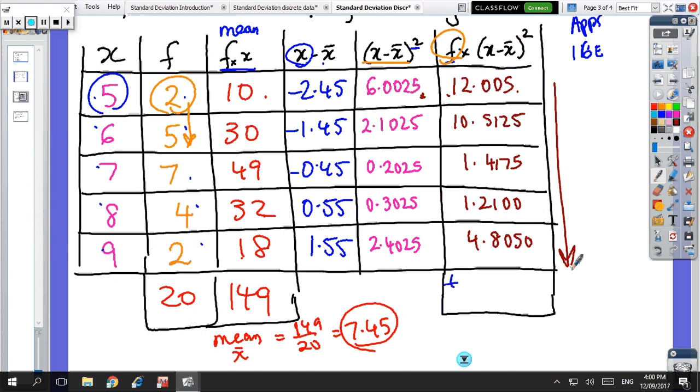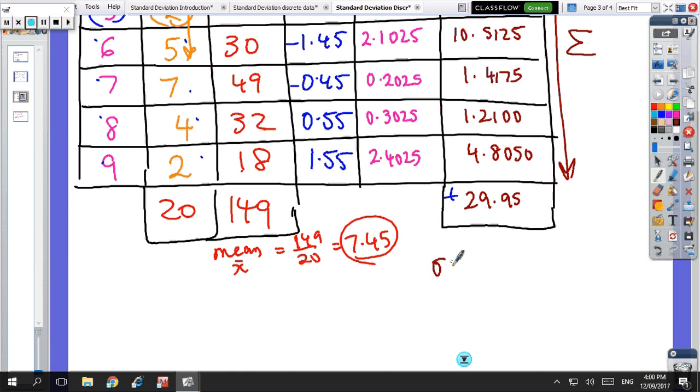Now we have to add up all these numbers because we have to get the sum. So 4.805 plus 1.21 plus 1.4175 plus 10.5125 plus 12.05, I get 29.95 on my calculator. If I made a mistake, it's not deliberate. So the standard deviation equals the square root of that number divided by 20. So divided by 20 equals the square root of 1.4975, and that number, square root answer, equals 1.22. So that's the standard deviation. So copy that and come across. There's just one more slide I'll talk about.